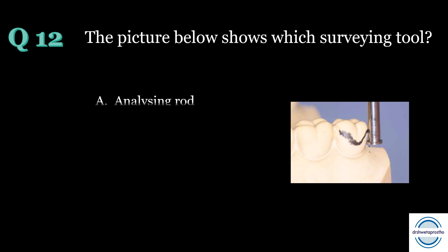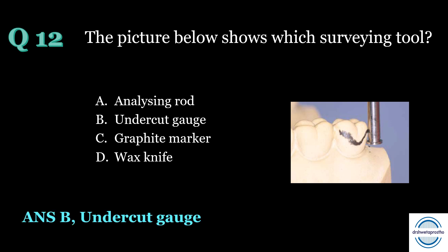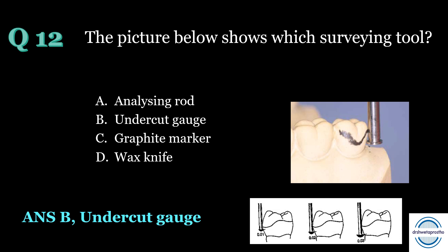Question number twelve: the picture below shows which surveying tool? A. Analyzing rod, B. Undercut gauge, C. Graphite marker, D. Wax knife. The answer is B, undercut gauge. An undercut gauge is used to measure the horizontal depth of the undercut. It is mainly available in 0.01 inch, 0.02 inch, and 0.03 inches.